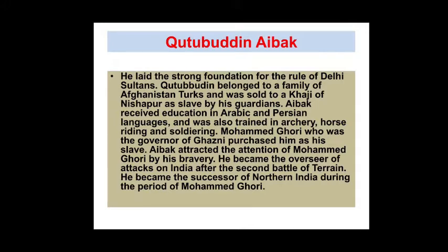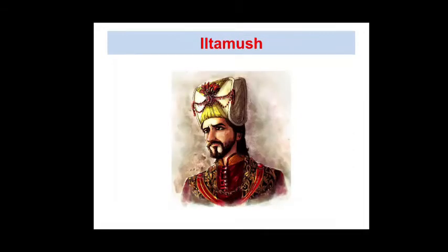Aibak attracted the attention of Muhammad Ghori by his bravery. He became the successor of northern India after the second Battle of Tarain — the first and second battles of Tarain were fought between Prithviraj Chauhan and Muhammad Ghori. He ruled independently after the death of Ghori. Aibak constructed the Quwwat-ul-Islam Mosque and also started the building of Qutub Minar.